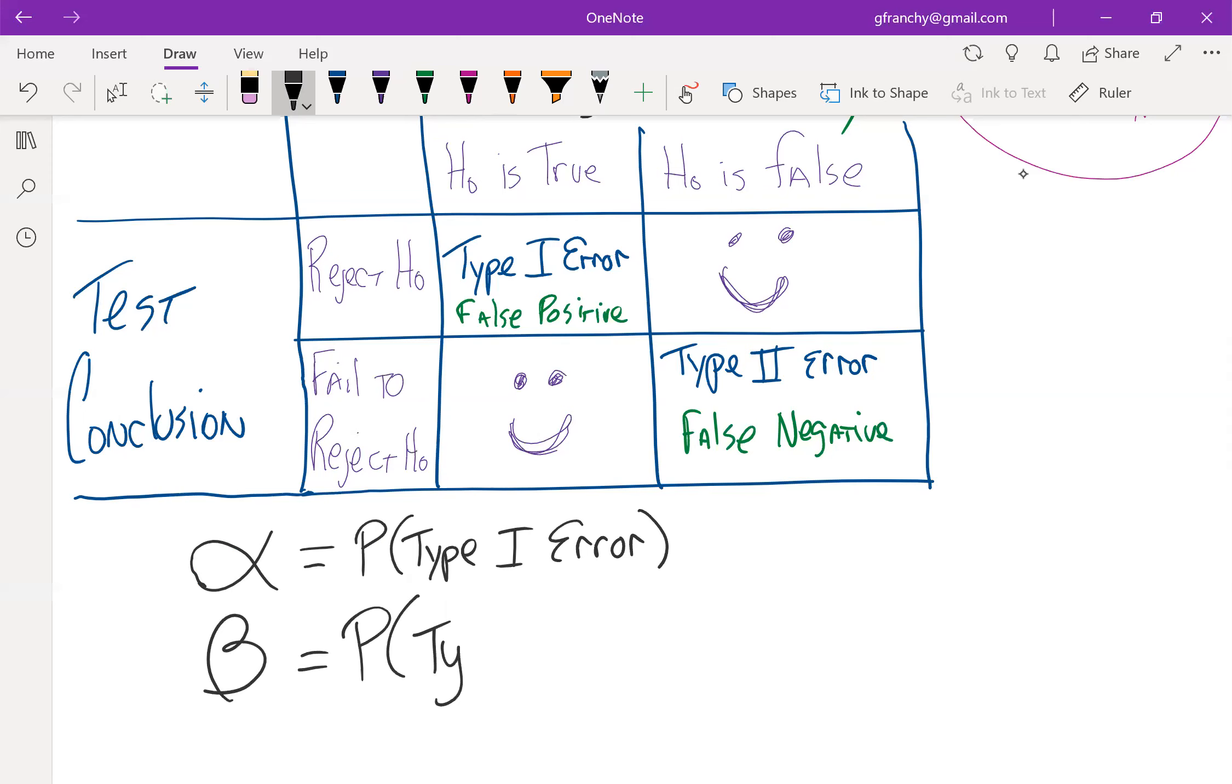And beta is the probability of a Type II error. Oh, that is sad. Let's try writing that again.